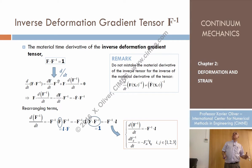Now, do we want to differentiate not F but F^{-1}? F^{-1} is the inverse deformation gradient tensor. Of course, it also depends on time. For every particle, the material derivative of F^{-1} can be obtained.